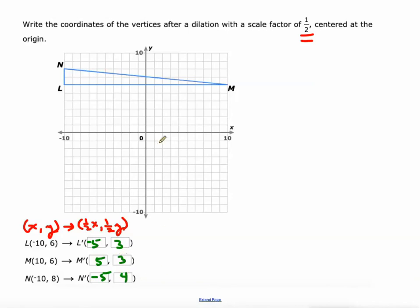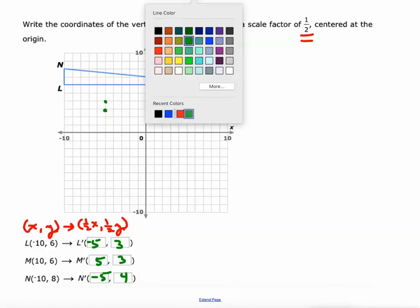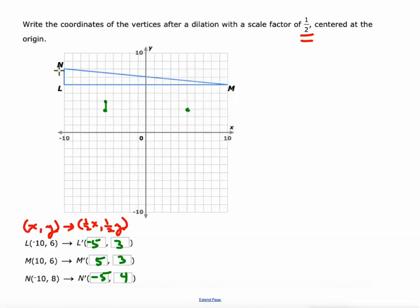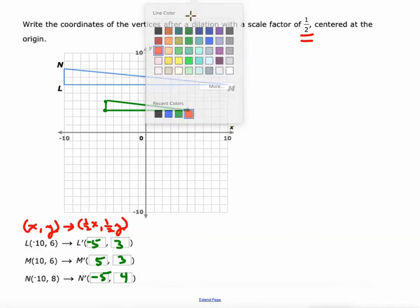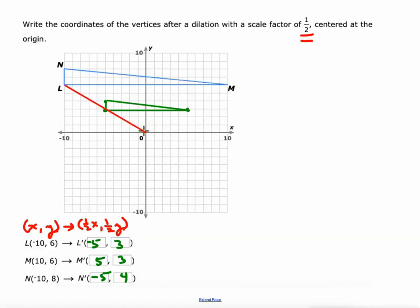And then we plot these points. Negative 5, 3 right there. 5, 3 right here. And negative 5, 4 right here. Because the scale factor is one-half, you're going to see that this side length right here is a length of 1 as opposed to 2, which is what it originally was. This is 10 as opposed to 20, and this one is half as much as well. And then let's connect the origin to the corresponding points. There's L goes right through L prime, there's N goes right through N prime, and there's M goes right through M prime.